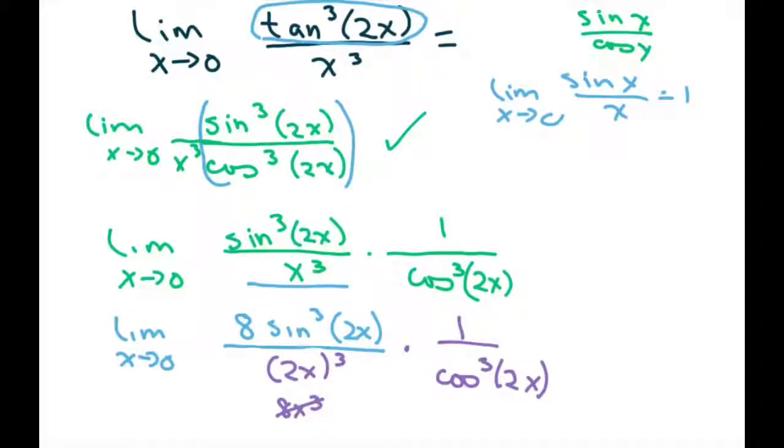Now we can take the limit. So all we're going to do is plug in 0. And what's that going to give you is this part, since it resembles, this part here resembles 1, because it has this form. So that's just going to be 8 times 1 times.